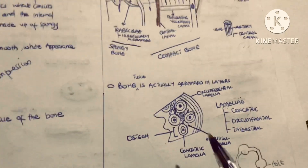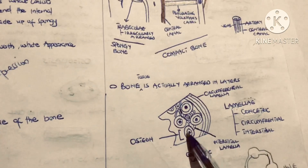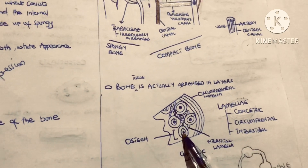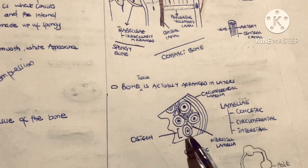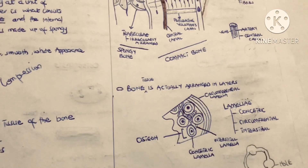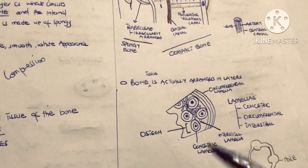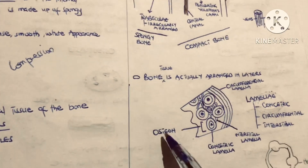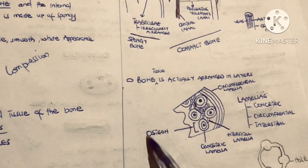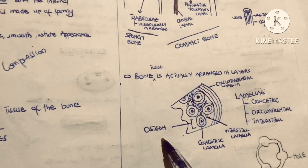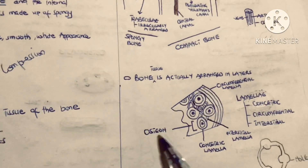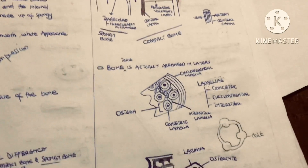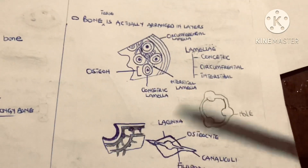These lamellae — especially the concentric lamellae — together with the central canal come together to form the functional bone units called the osteon. The osteon is the functional bone unit.